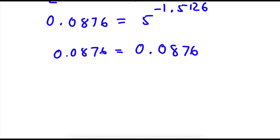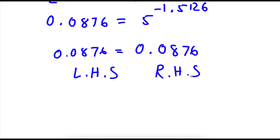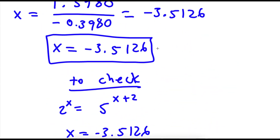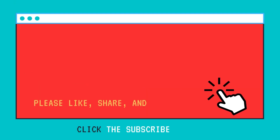Because both of these values are equal to each other, we can write LHS equals RHS — the left-hand side is equal to the right-hand side. And because this is true, we know that our value of x is correct: x is equal to negative 3.5126.